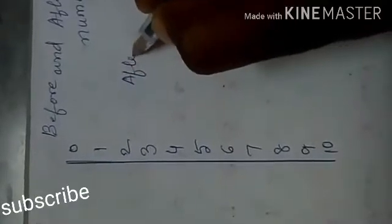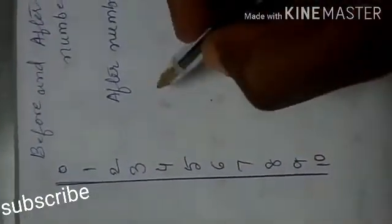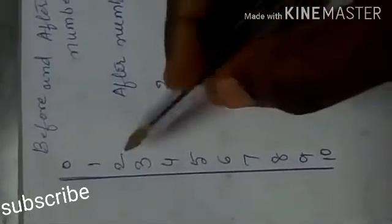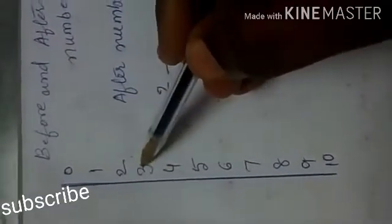First we will see after numbers. See after 2 — after 2 means the numbers which come below the 2.